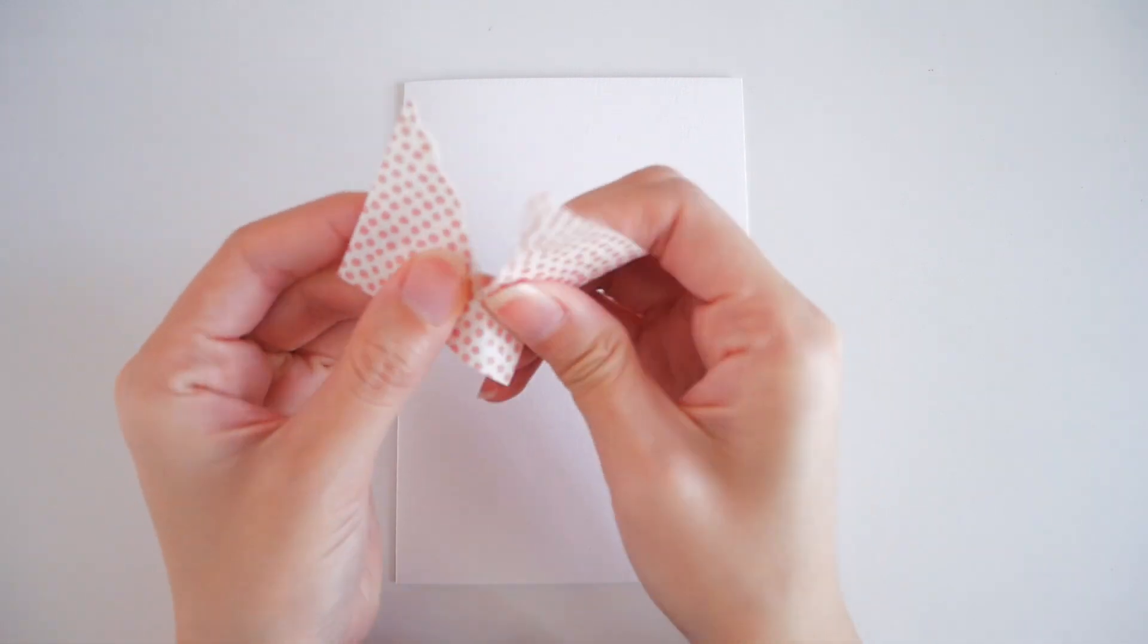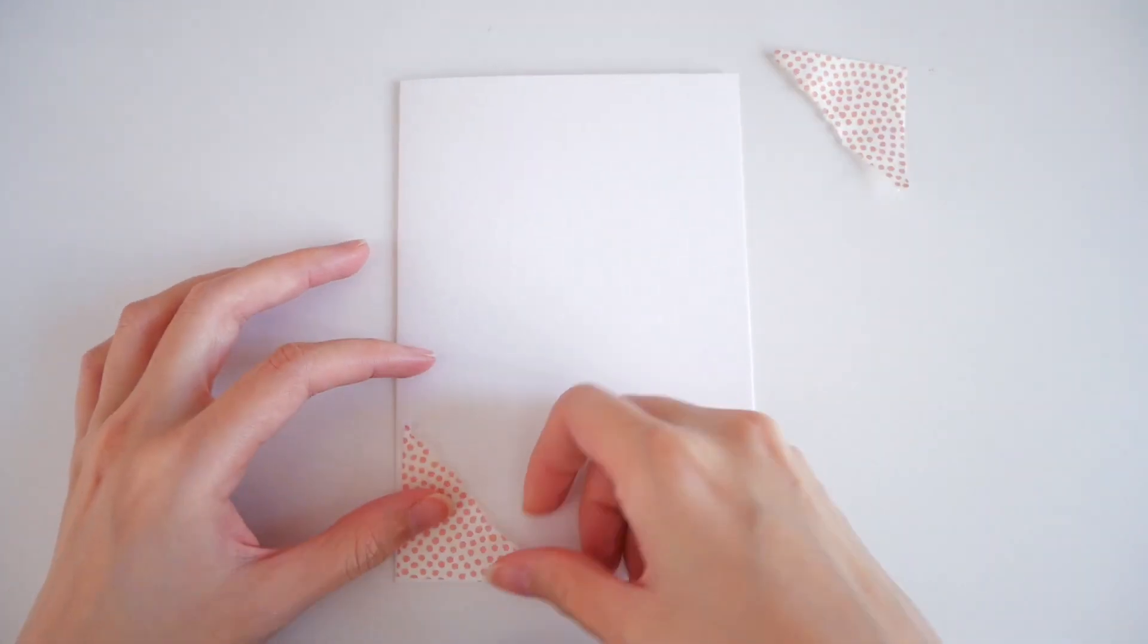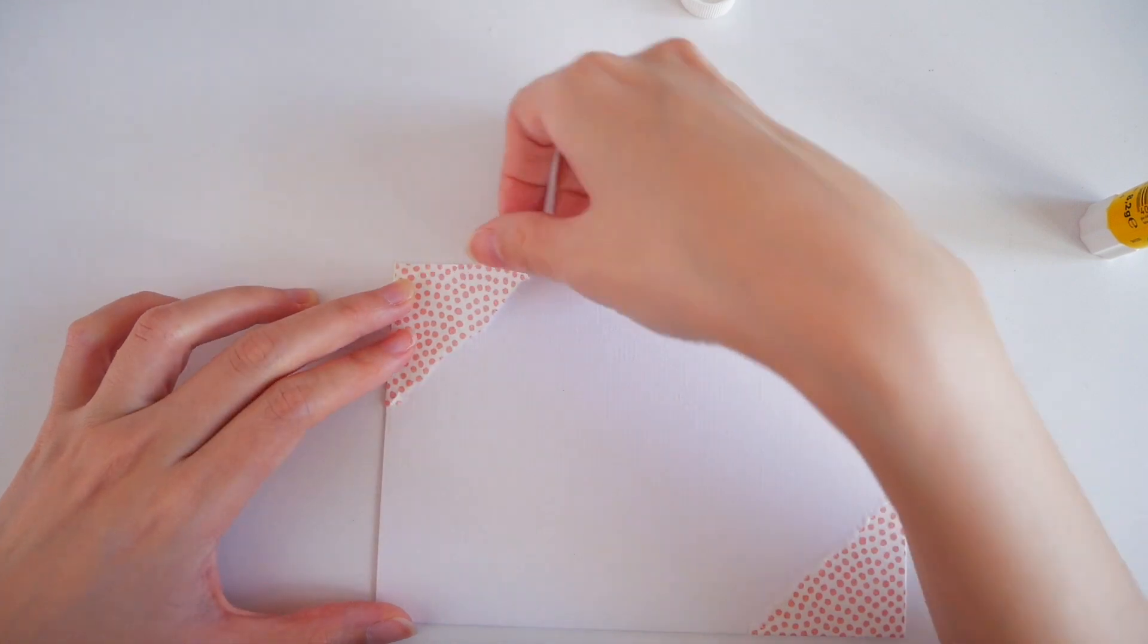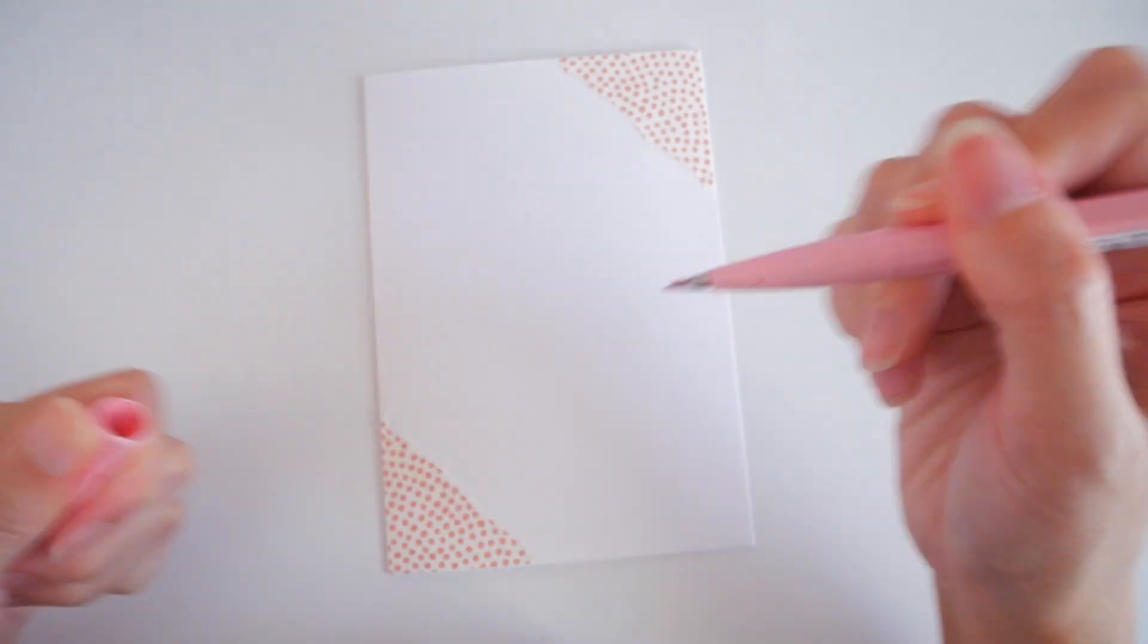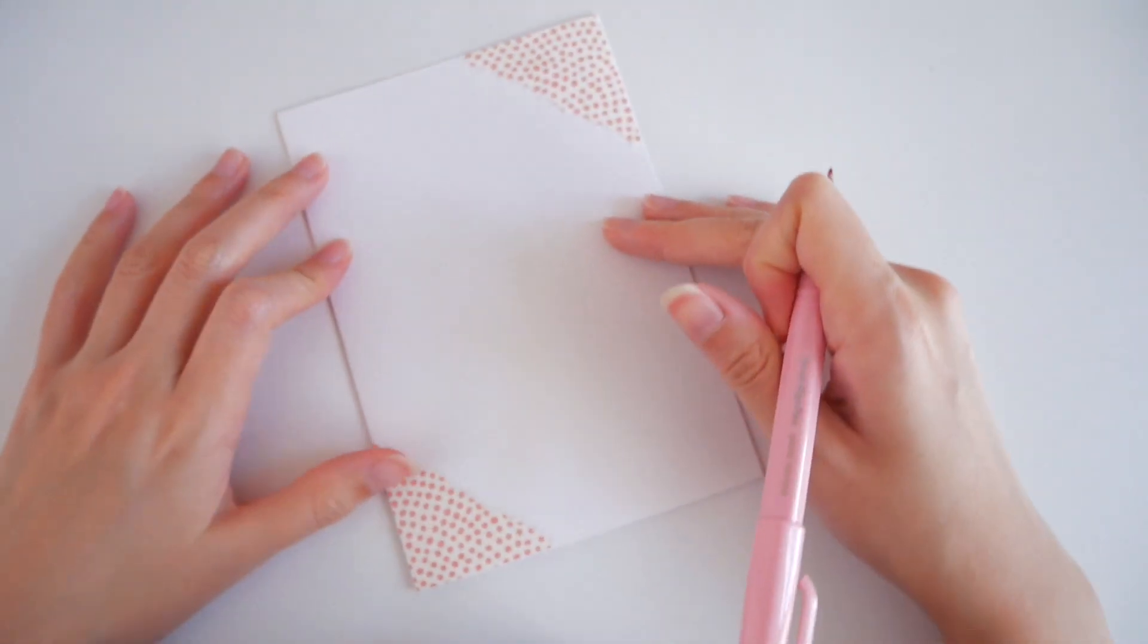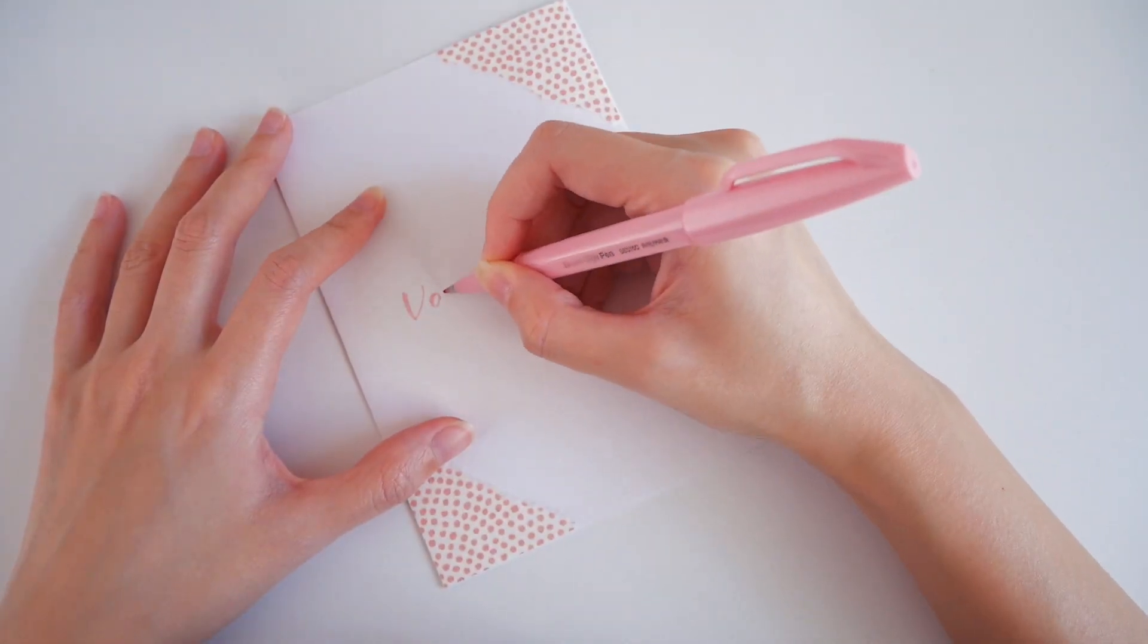Next, I decorated the blank card by decorating the corners and keeping it minimal. Then, I used the brush pen in a matching shade of pink to letter Happy Valentine's Day at the center.